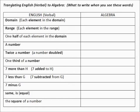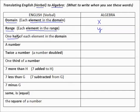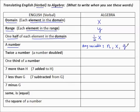Let's begin with translating English, or verbal, to algebra. In other words, what do we write when we see these words? When we see the word 'domain' or 'each element in the domain,' we write X. Similarly, when we see 'range' or 'each element in the range,' we write Y. A number can be represented by any variable, such as N for number, or X for a number in the domain, or G — any random letter.